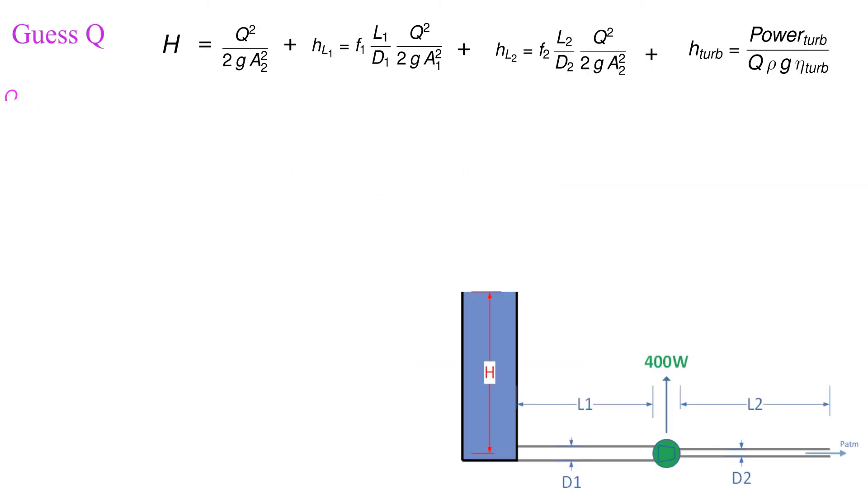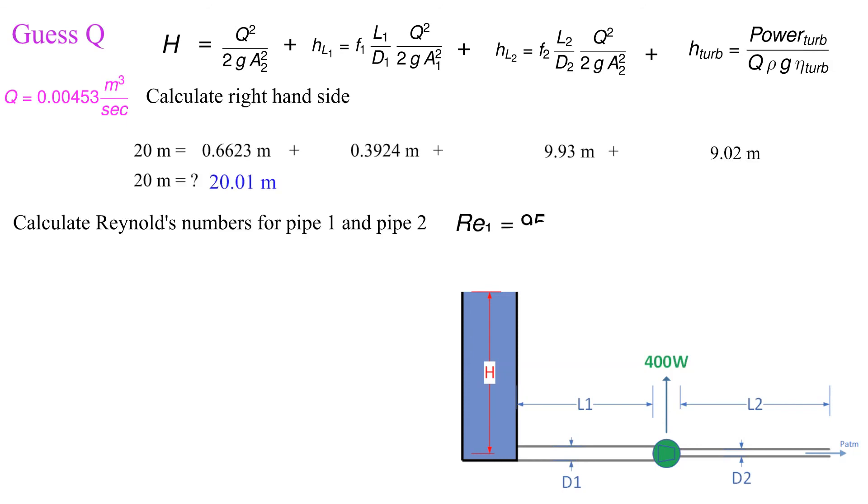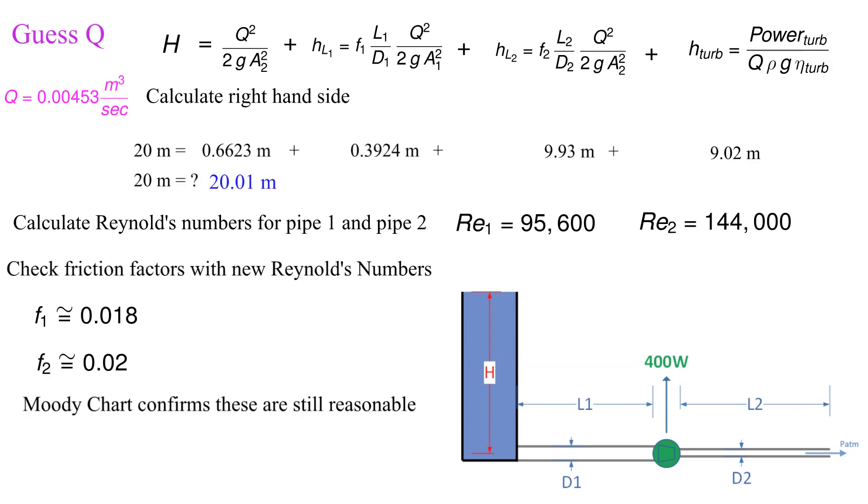For our final iteration we choose 0.00453 cubic meters per second and we obtain 20.01 meters. There's no point trying to improve on this answer. The uncertainty in our friction factor that we've obtained by reading off the Moody chart does not justify trying to get closer than that.